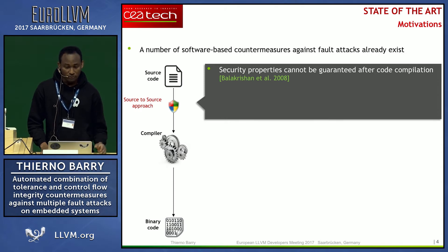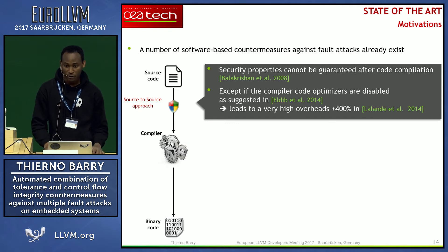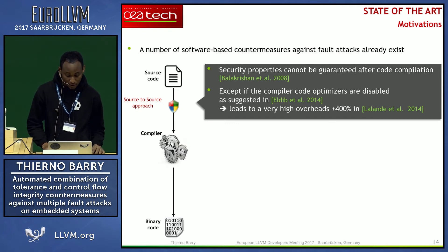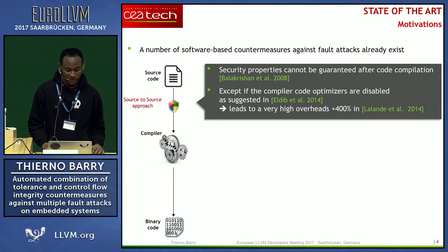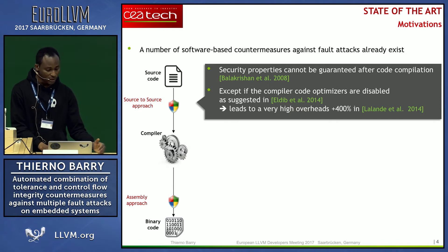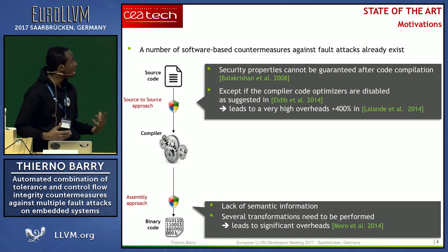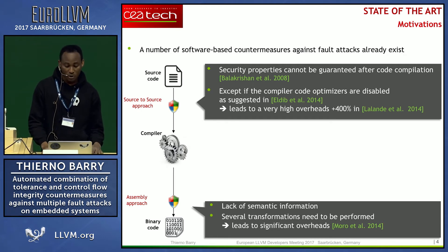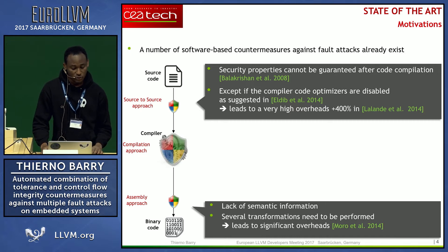In the state of the art, most tools suggest compiling with -O0 in order to avoid optimizations, but as a consequence that drastically increases execution overhead. The second approach is the assembly approach, but the problem is that since we have many transformations to perform to implement countermeasures, we lack semantic information, making code transformation harder and increasing execution time and code size.